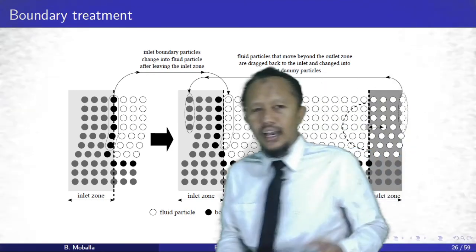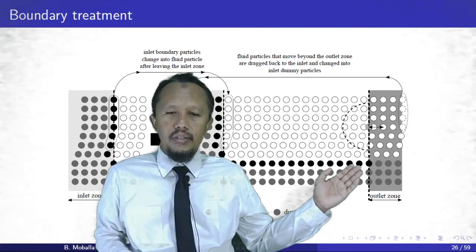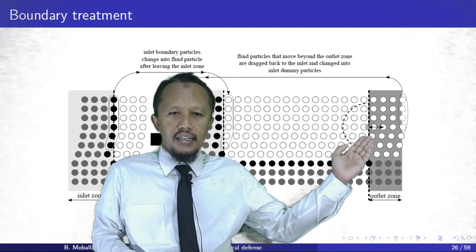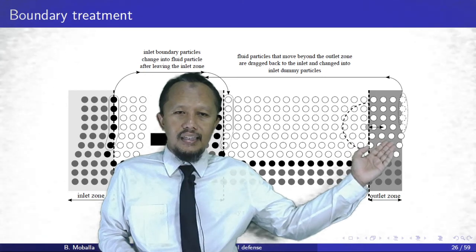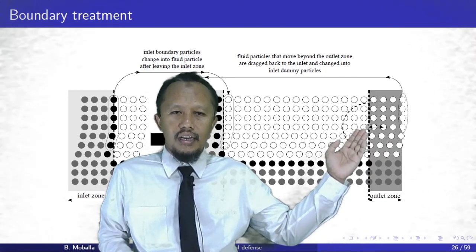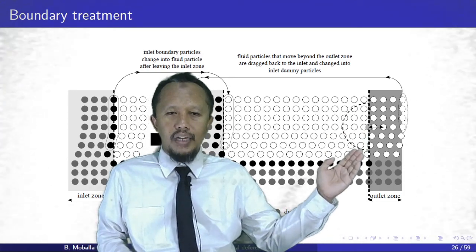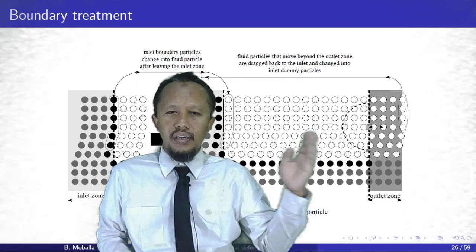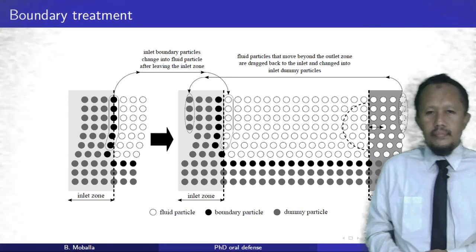At the outlet, we enforce a Neumann boundary condition for velocity. We define an outlet region, then particles at the outlet region are dragged to the outlet boundary line, and we obtain the field variable values from SPH interpolation using a half-support region into the inner domain.